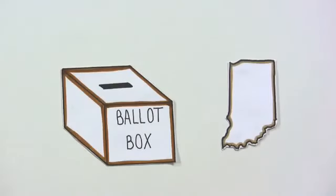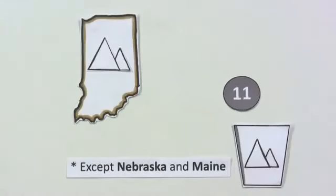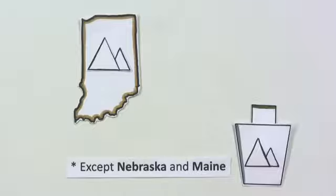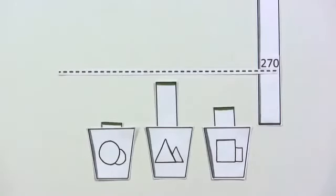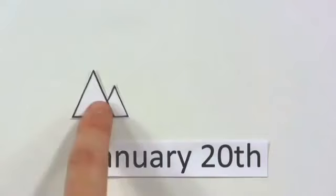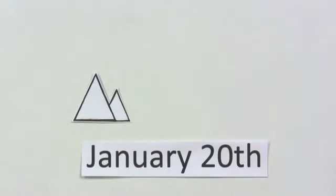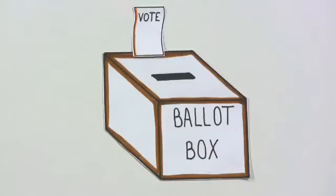So let's recap. Your vote helps your state choose a single candidate. That candidate receives all the electors from your state. The candidate who wins enough states to reach 270 total electors wins the national election and becomes the president-elect. Then, on the following January 20th, the president-elect is sworn in as the next President of the United States. And it all starts with your vote — make it count.